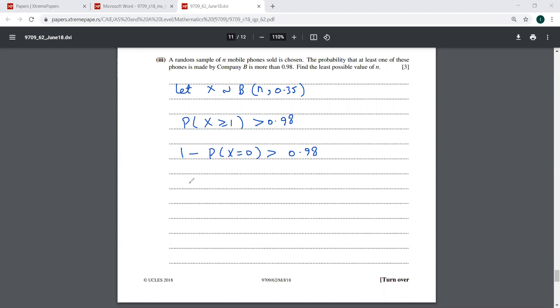So this would be one minus NC zero times 0.35 raised to power zero times 0.65 raised to power N is greater than 0.98. Minus one, so which is going to be minus 0.02.